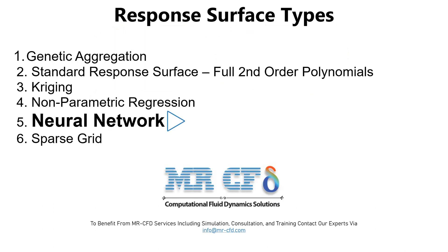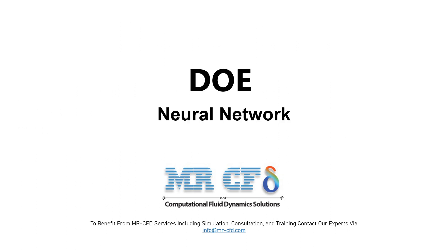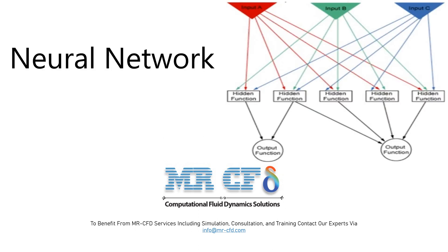The response surface production mechanism in the ANSYS Workbench software optimization section has six different types. Type number five is called neural network. The neural network model represents a mathematical technique based on natural neural networks in the human brain. The structure of this neural network model is such that each of the input parameters or inputs is connected to the weights by arrows, which determine whether the hidden functions are active or inactive.